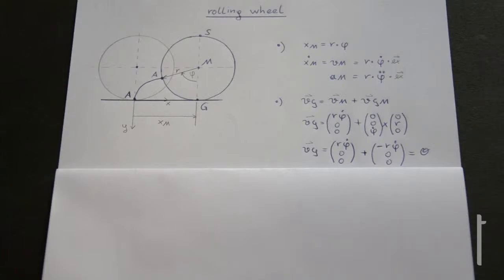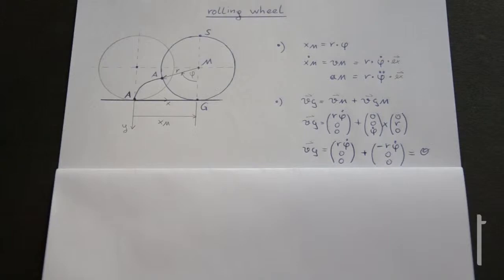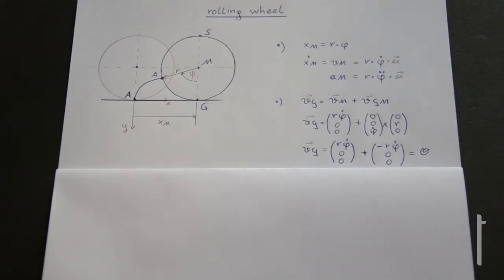We have a wheel rolling along the ground and we want to look at its velocity distribution — how big are the velocities and accelerations at certain points of the wheel. The premise is that the wheel is purely rolling, which means it is not slipping. This is the definition of pure rolling.